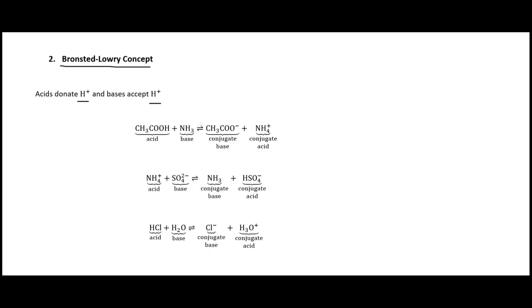For example, acetic acid plus ammonia forms the acetate ion and ammonium ion, where acetic acid donates the hydrogen and ammonia accepts it. We call ammonium a conjugate acid because it can act as an acid. It can then donate one of its hydrogens to sulfate, giving ammonia and hydrogen sulfate as the conjugate acid.